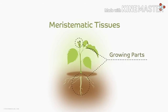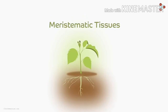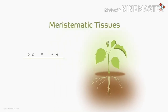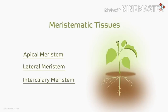Now let's see in how many parts of the plant these meristematic tissues are present. They are present in three parts. So based on their location, meristematic tissues have three types. The three types of meristematic tissues are: apical meristem, lateral meristem, and the third one is intercalary meristem.